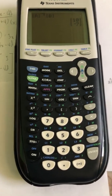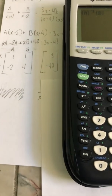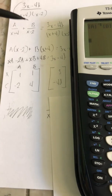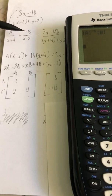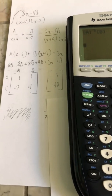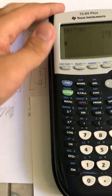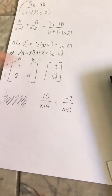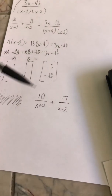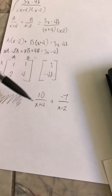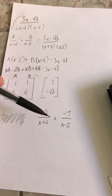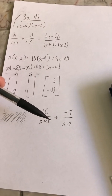Multiplying gives us 10 and negative 7. The 10 goes with our A value and negative 7 goes with our B value. So what you're left with is 10 over (x plus 4) plus negative 7 over (x minus 2).